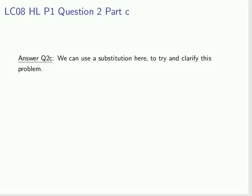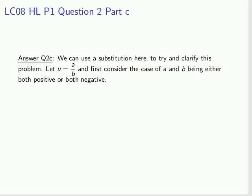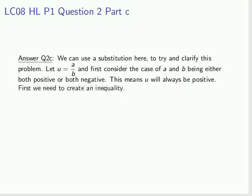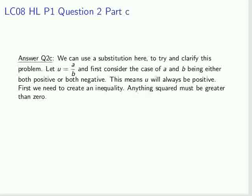Now we're going to use a substitution to deal with this again. We're going to let u equal a over b, and the first case is where a and b have the same sign. This means u will always be positive. Now we need to create an inequality. So, let's say anything squared must be greater than zero. That's a well-accepted truth.